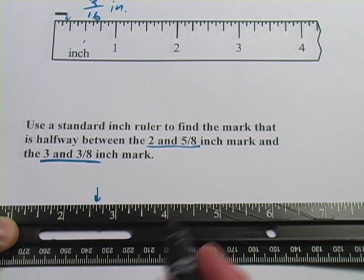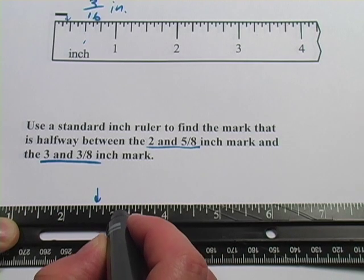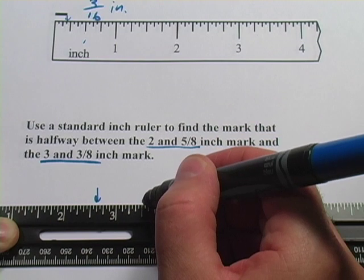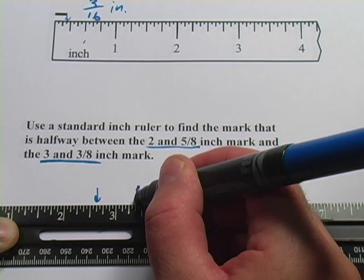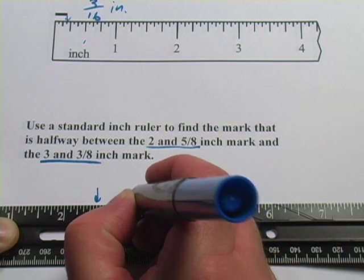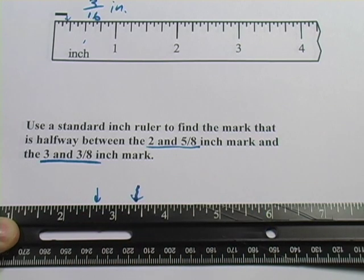And now I want to find 3 and 3/8. Do the same thing. Here's the 3, and I've got 1, 2, 3/8. It's hard to see here, so let's make sure this points directly at it. Yeah, I think that's got it. Okay, there's my 3 and 3/8.